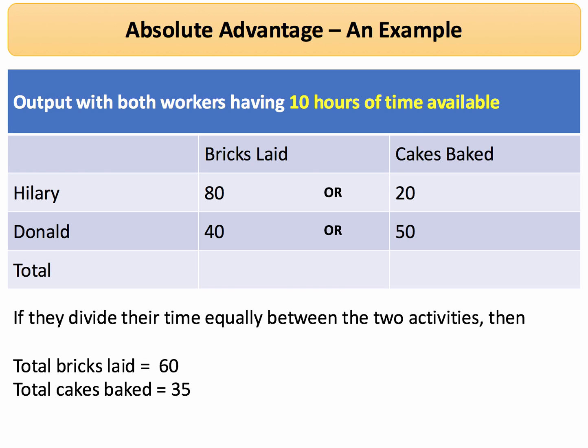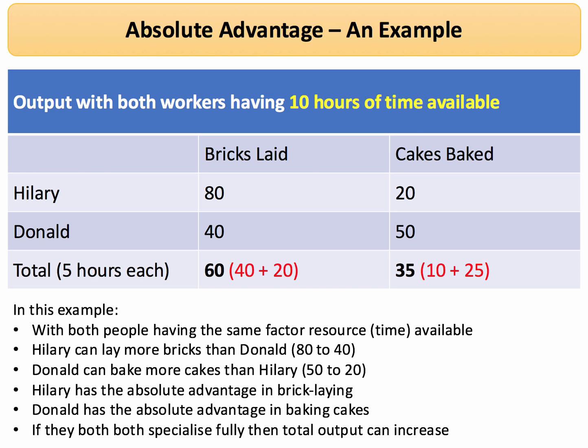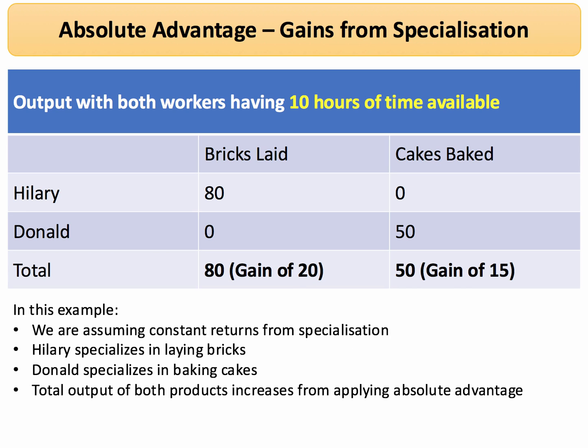So it makes sense for them to specialize based on absolute advantage, and if they do that the total output of both can increase. If they split their 10 hours equally — five each — we'd have 50 bricks laid and 35 cakes baked. But if they specialize, Hillary lays 80 bricks and Donald bakes 50 cakes, giving a gain of 20 bricks and 15 cakes.